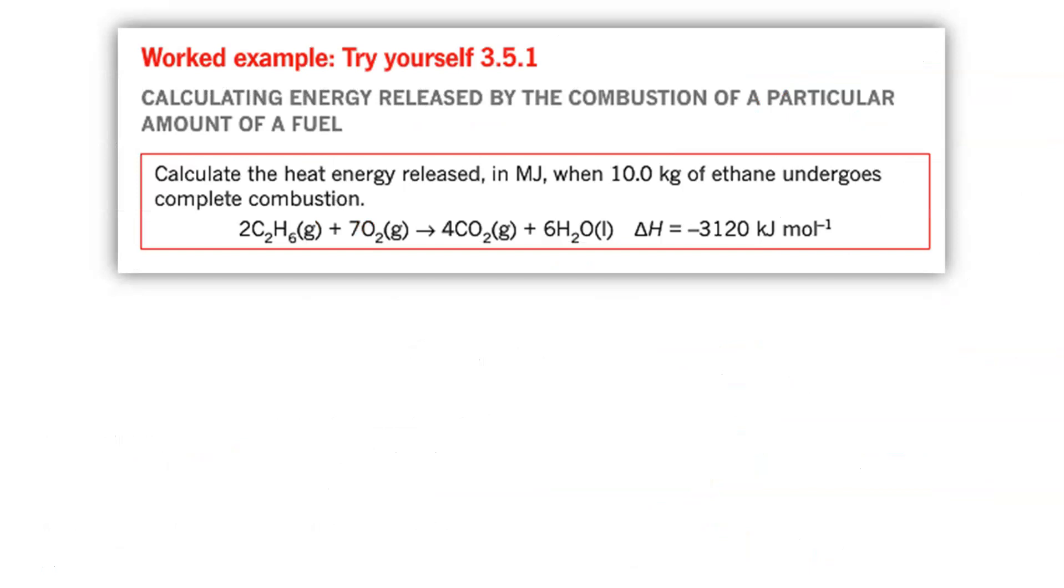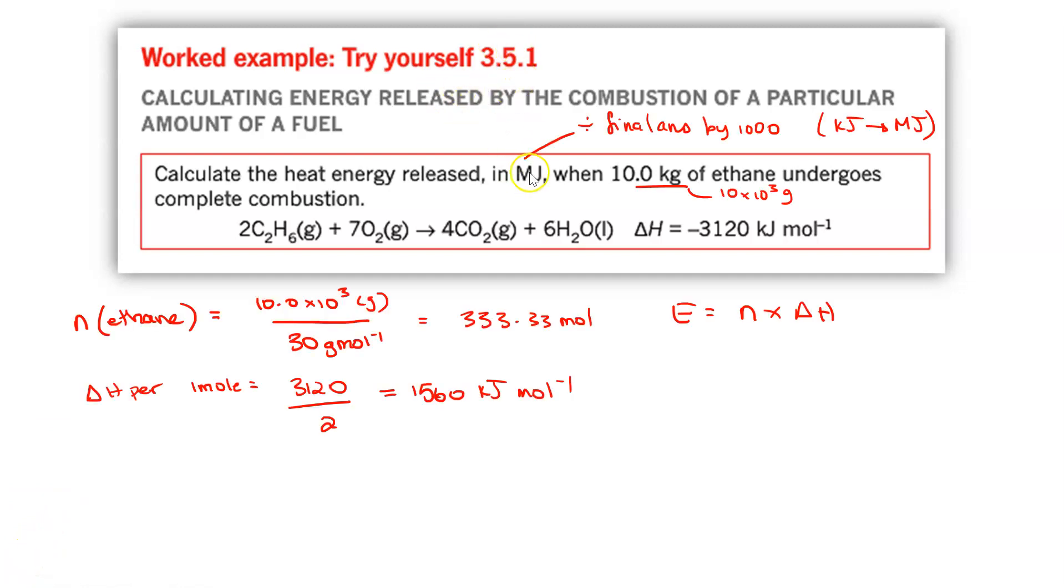Your turn to try. This is exactly the same process. This time we are using ethane and you've been given the balanced chemical equation and the kilojoules per mole for ethane. So you just need to work out your molar ratios and your number of mole of ethane from there. Pause and come back and check your answer. Hopefully you figured out that your answer must be in megajoules. We've got 10 kilos again. So when we work out the number of mole of ethane by taking mass divided by molar mass, we get 333 moles.